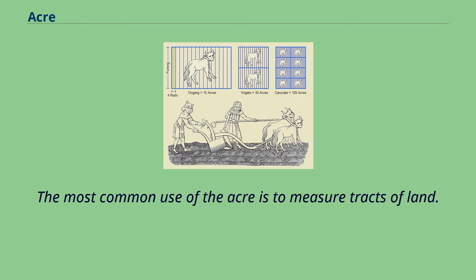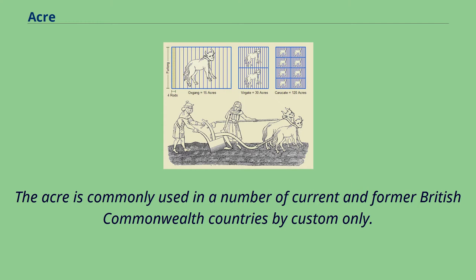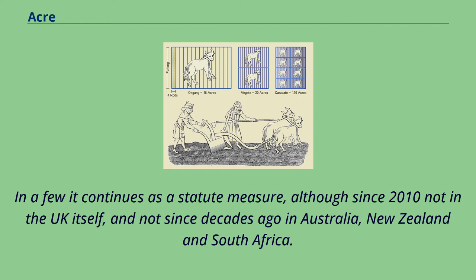The most common use of the acre is to measure tracts of land. The acre is commonly used in a number of current and former British Commonwealth countries by custom only. In a few it continues as a statute measure, although since 2010 not in the UK itself, and not since decades ago in Australia, New Zealand, and South Africa.